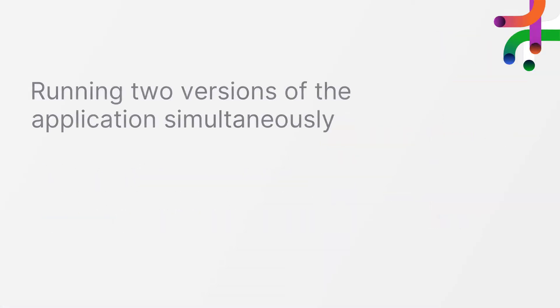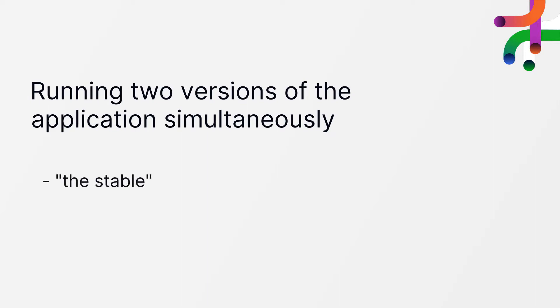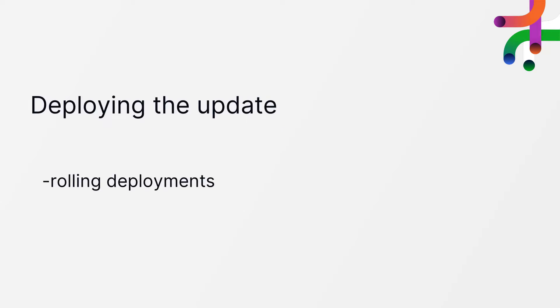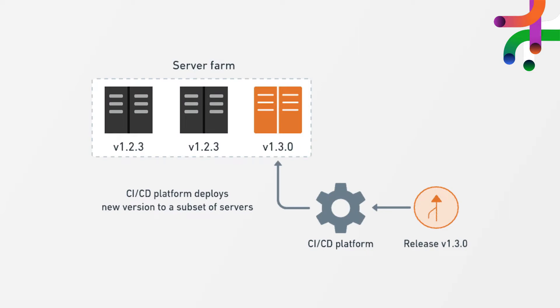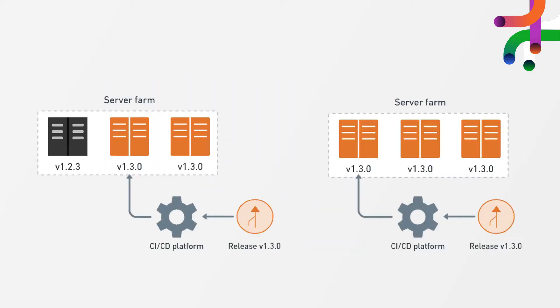So how does canary deployment work? Canary deployments involve running two versions of the application simultaneously. We'll call the old version the stable and the new one the canary. We have two ways of deploying the update: rolling deployments and side-by-side deployments. In a rolling deployment, we install the changes in waves or stages, a few machines at a time, while the others continue running the stable version. As soon as the canary is running on one server, a few users begin seeing the updates. As we grow confident in the canary, we continue installing it on the rest of the machines until they're all running the latest release.